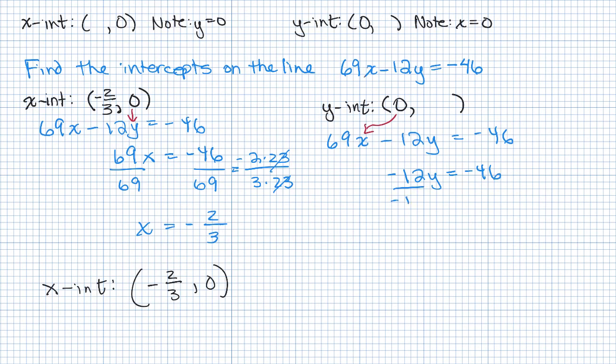And we'll just divide both sides by -12. And again, we're going to have to reduce. So a negative divided by a negative will be positive. So let's see. What goes into both 46 and 12? Well, 2 goes into both of them. So if I divide the top by 2, 46 divided by 2 is 23. And 12 divided by 2 is 6. So it looks like our y-coordinate is going to be 23/6.